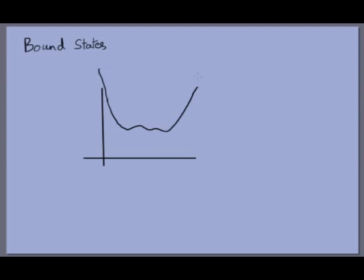At minus infinity and infinity the potential goes to infinity, but in the middle there is some depression. If you have a particle at a point with a certain energy E, it will go down, come back up, reach that point, and then go back down — oscillating to and fro between two points. At those endpoints, all energy is potential energy so kinetic energy is zero and it cannot move further upward. As it comes down, V(x) decreases so kinetic energy increases, reaching maximum at the lowest point.